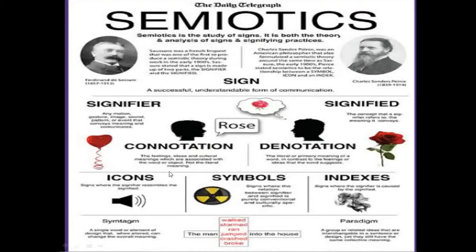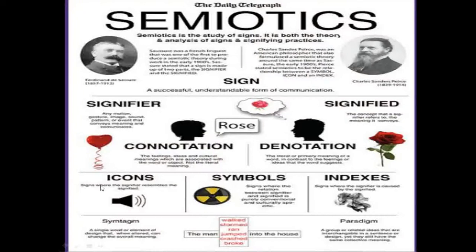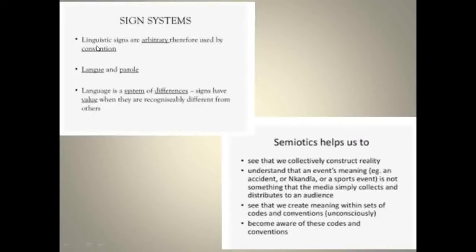We saw how there was connotation and denotation: the denotation would be the literal meaning, whereas the connotation would be meaning that is culturally or individually constructed. We also saw the differences between symbols and indexes, and also syntax and paradigm. We saw how sign systems were mostly arbitrary, mainly arbitrary, and therefore used by convention rather than any logic or reason.